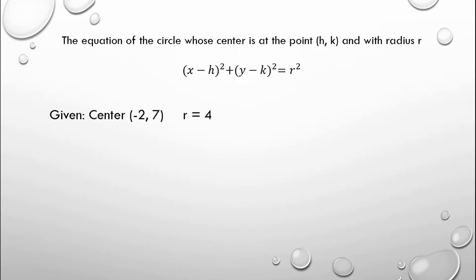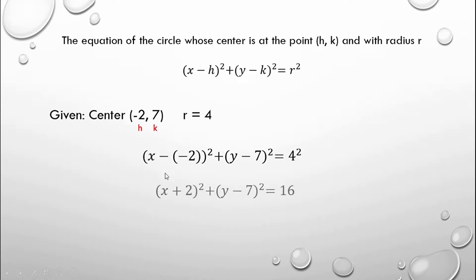The given: center is negative 2, 7 and the radius is 4. For h we have negative 2 and k we have 7. Then substitute the given to the formula: x minus negative 2, squared, plus y minus 7 squared is equal to 4 squared. Then x minus negative 2 becomes x plus 2, so we have x plus 2 squared plus y minus 7 squared is equal to 16.